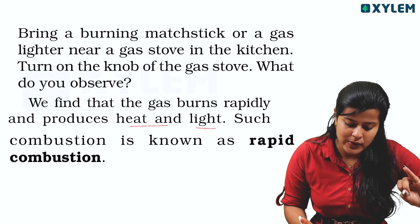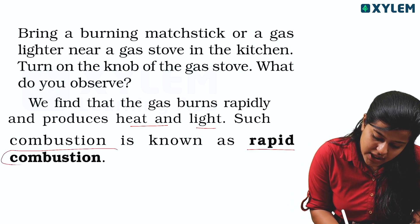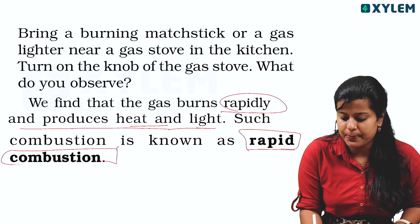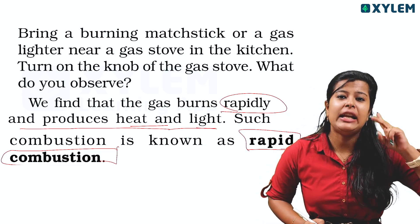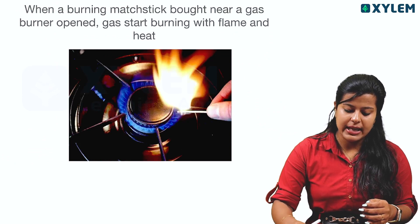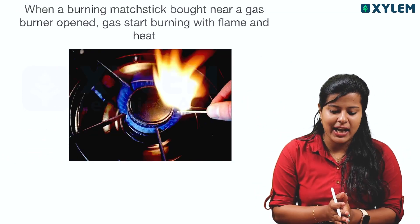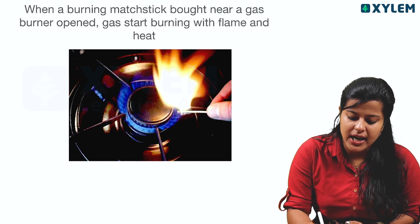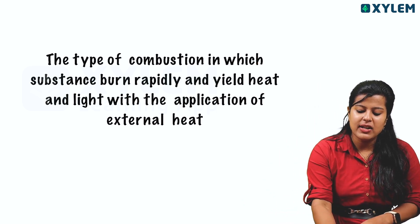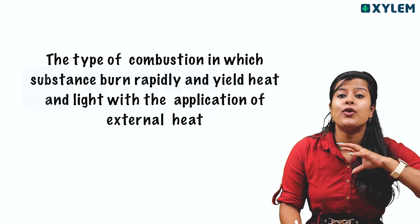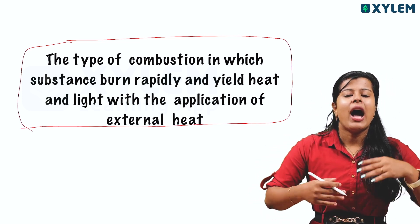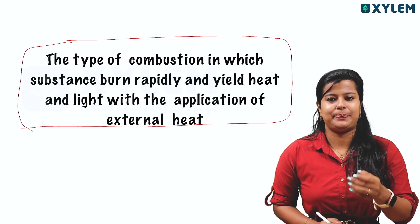Such combustion is known as rapid combustion. The gas burns rapidly and produces heat and light. The type of combustion in which a substance burns rapidly and yields heat and light with the application of external heat is called rapid combustion. That is the definition. External heat application is important.